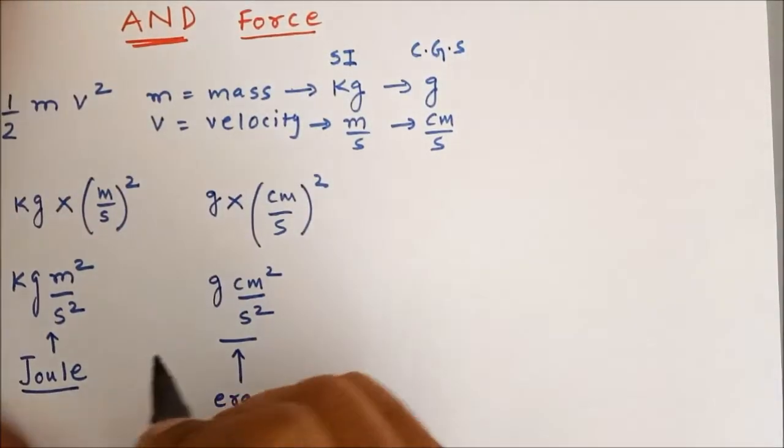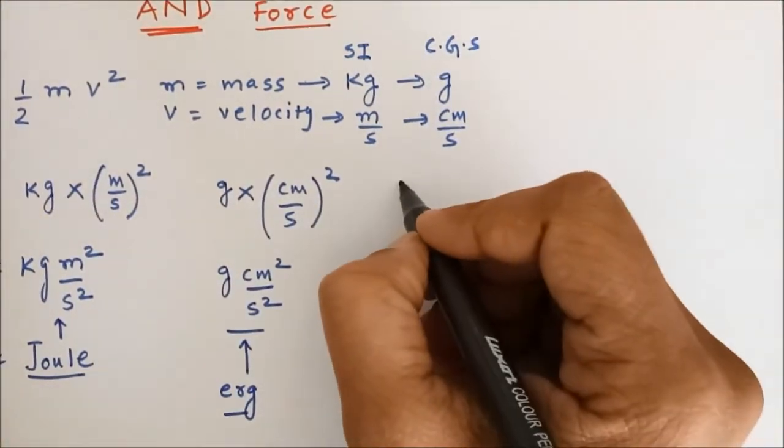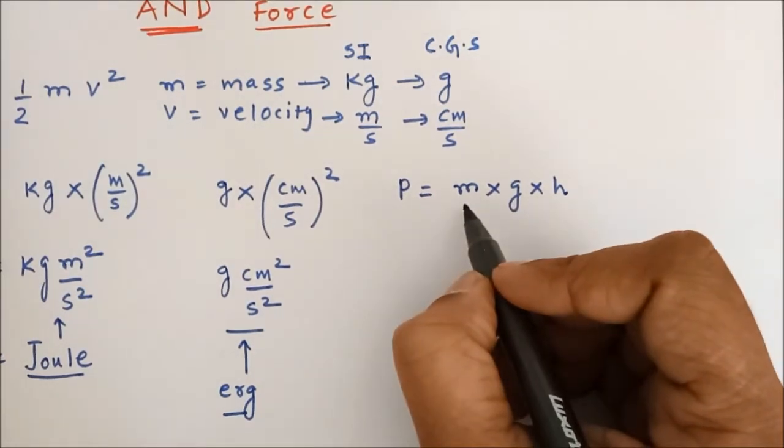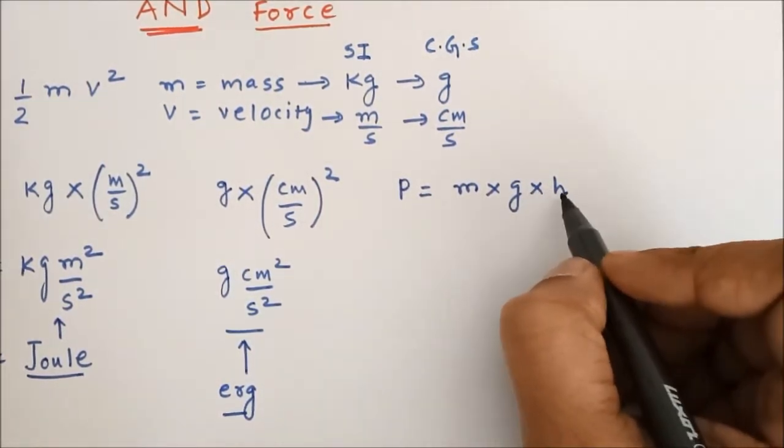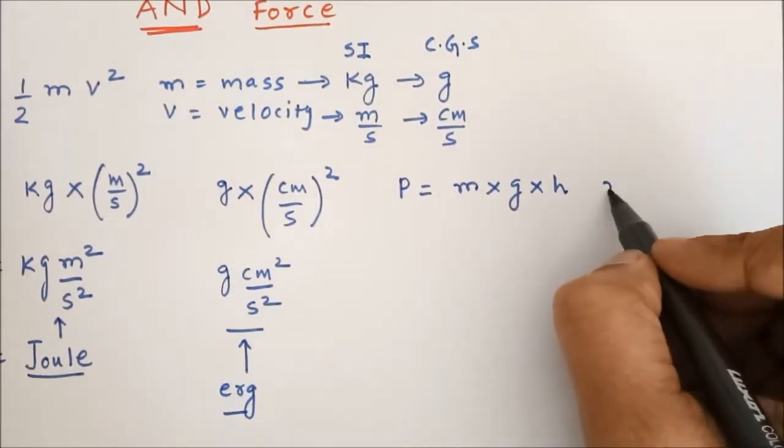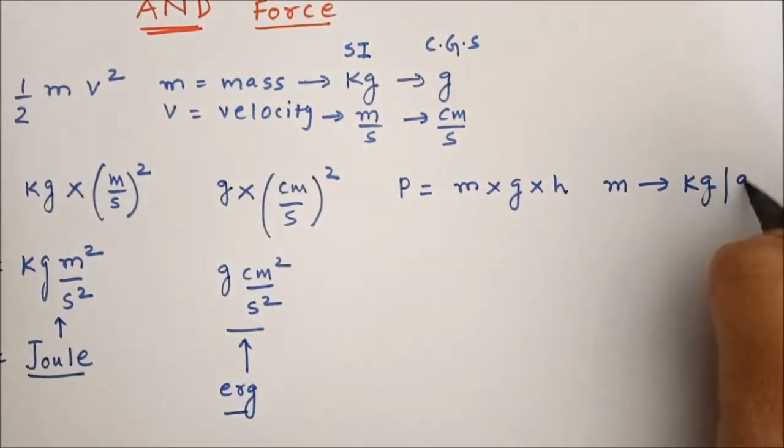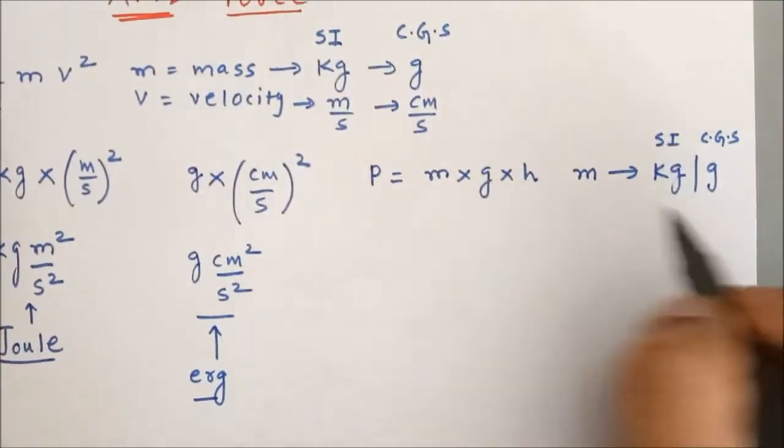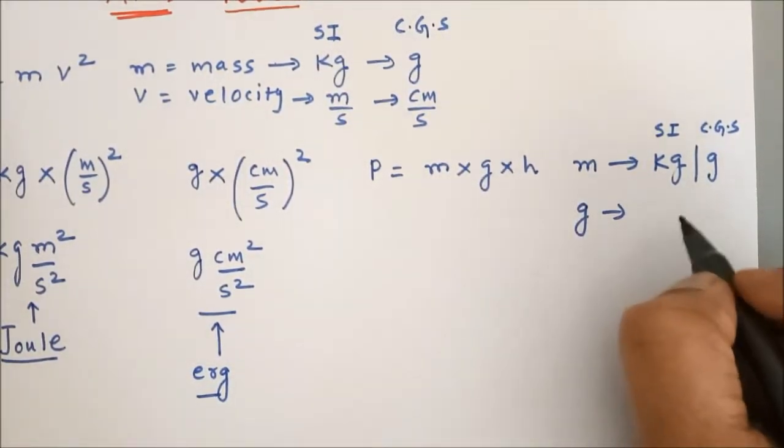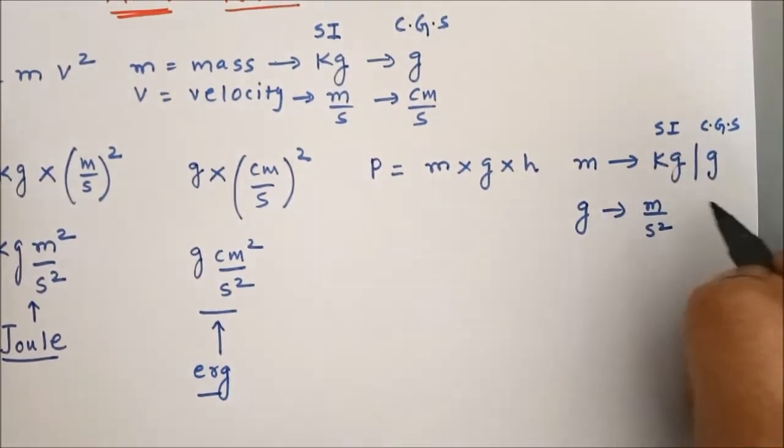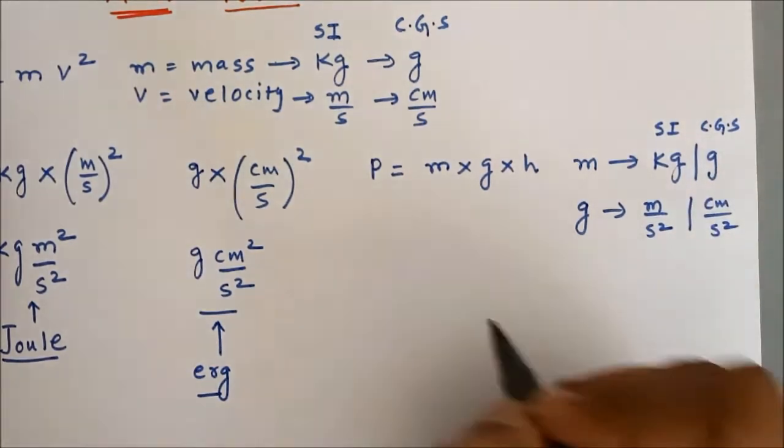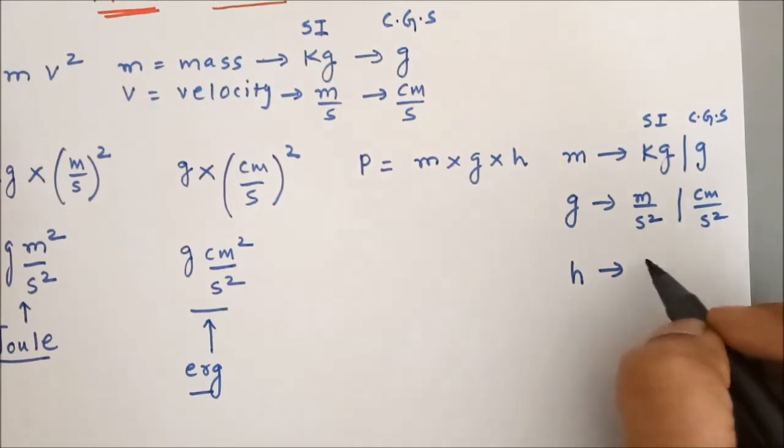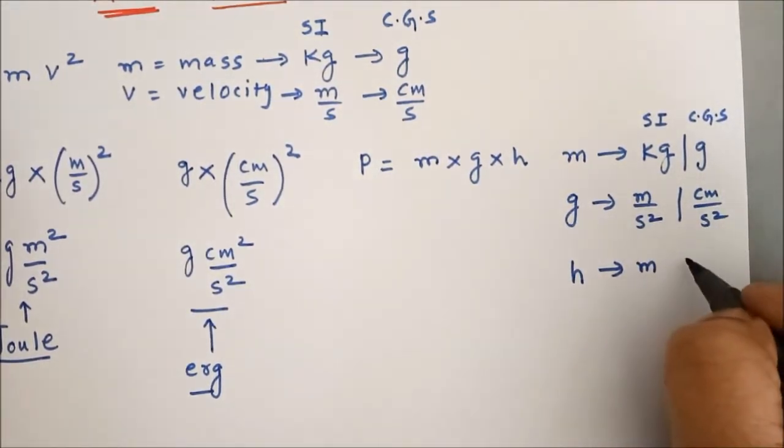Now, let us talk about potential energy and again you are going to get the same answer but let us do it. So, potential energy that is equal to m into g into h where m is the mass, g is the acceleration due to gravity, h is the height above the earth surface. m is in kilogram, it can be taken in grams also. This is SI CGS, g is acceleration due to gravity that is meter per second square in SI and in CGS it is centimeter per second square. Now, h is the height, height is nothing but the distance in SI unit height has meter. In SI unit height has meter unit and in CGS it has unit centimeter.